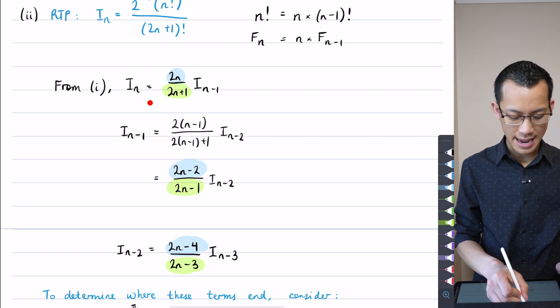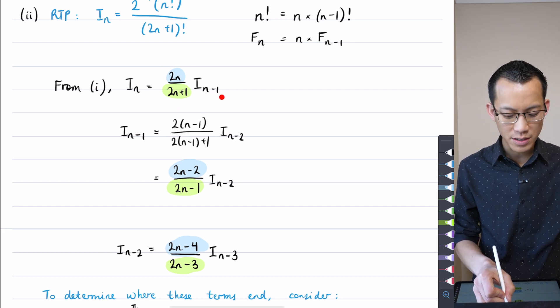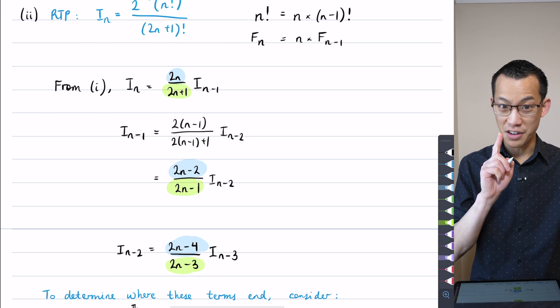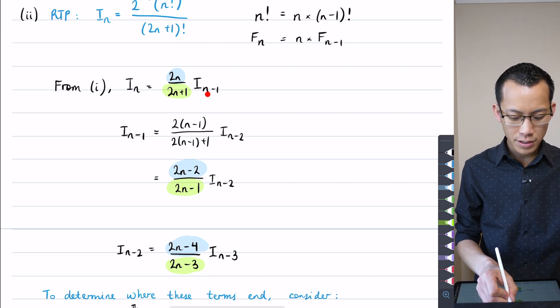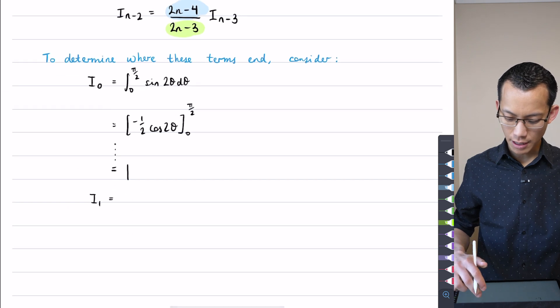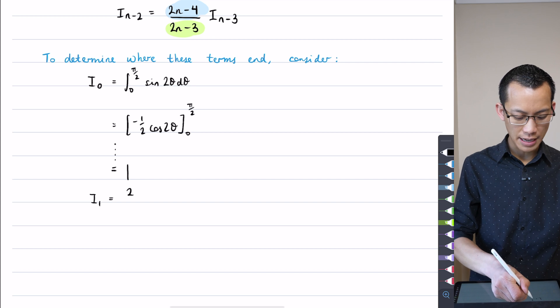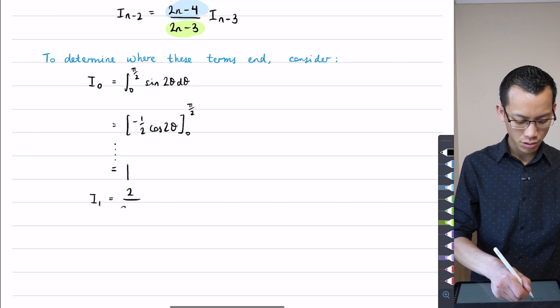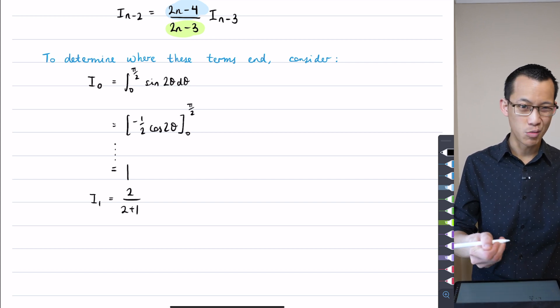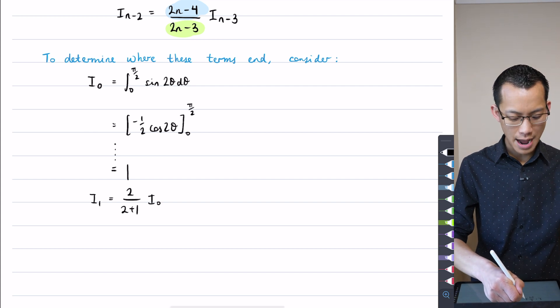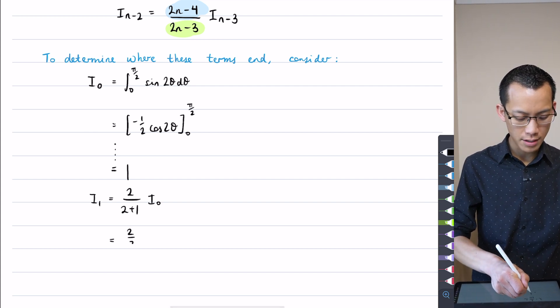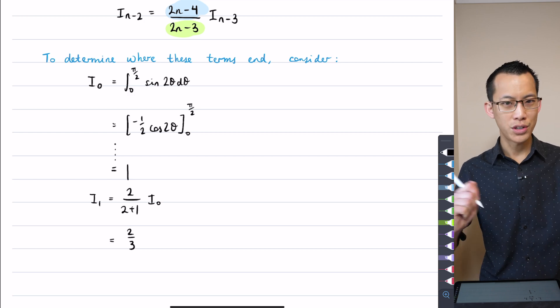As you saw right before, again, from part 1, here's our definition for In. So if my In minus 1 is going to be i0, because I know what that's equal to, then I'm choosing n equals 1 on the left hand side here. So it's going to be i1 equals 2n, which in this case is 2, over 2n plus 1, so that's 2 plus 1, and then I multiply by i0. So I'm getting 2 thirds times 1, which is 2 thirds.